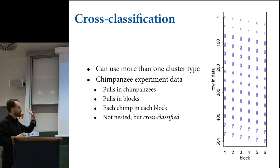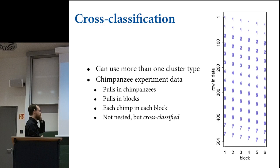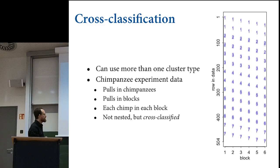This is a context in which we need to cluster on multiple types of things at the same time. We have pulls of levers in chimpanzees, pulls in blocks, and each chimp is in each block. This is not a nested structure, but rather what people call cross-classified.